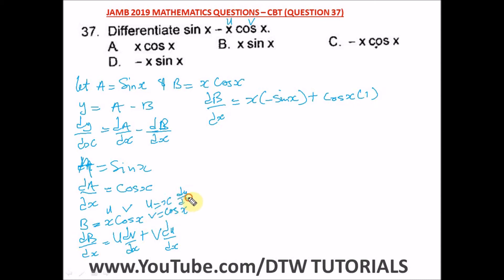du/dx equals 1 because you multiply 1 by the coefficient — which is 1 — and subtract 1 from the power of x, giving x raised to power zero. And x raised to power zero is 1, and 1 times 1 is 1. I advise you to revise differentiation properly.